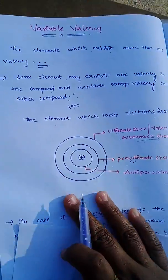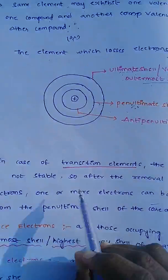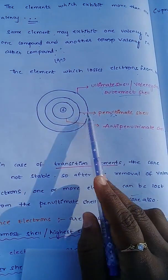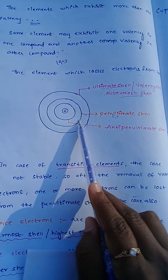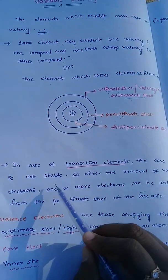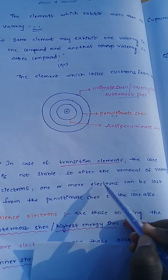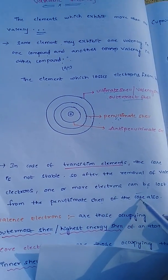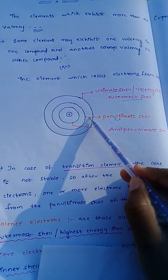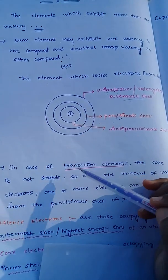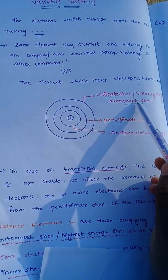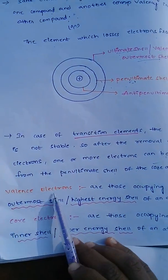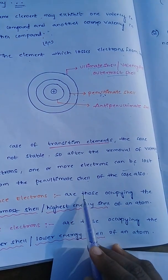Why does this happen? In the case of transition elements, the core is not stable. Core means the inner layer. So after the removal of valency electrons, one or more electrons can also be lost from the penultimate shell of the core. In the case of transition elements, the core is not stable, so removal of electrons happens from both valency and penultimate shells.